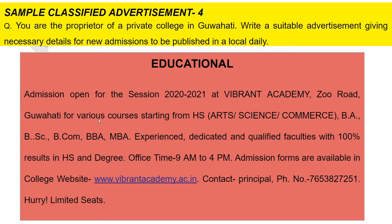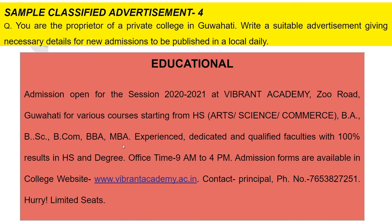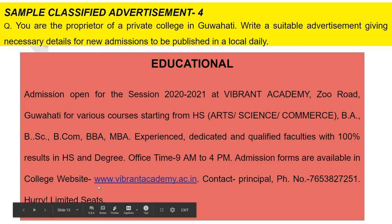Write the college address and mention the courses you are offering — for example, Higher Secondary in all streams, Degree in all streams, and professional courses. You can also mention experienced, dedicated, and qualified faculties with 100% results. State that admission forms are available on the college website — create a website name with your own imagination. End with the contact number for the principal.